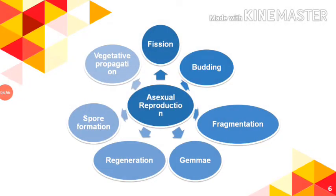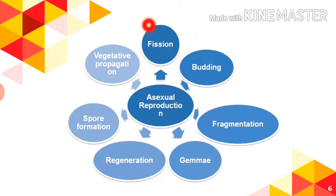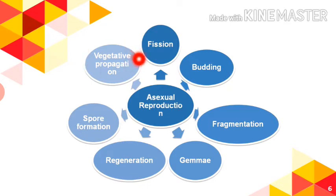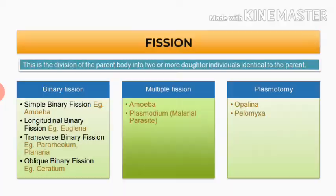The different kinds of asexual reproduction are: fission, budding, fragmentation, regeneration, spore formation, and vegetative propagation. In this video tutorial, we will be discussing only fission in detail.